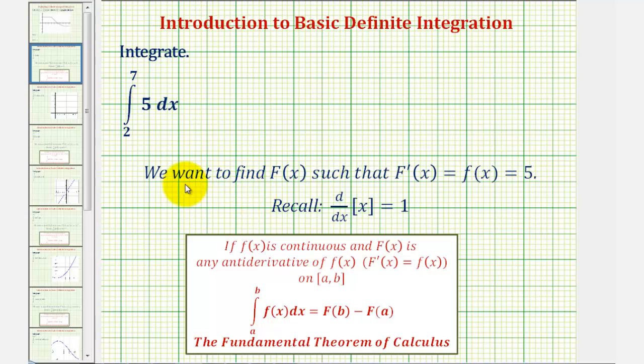To find the anti-derivative, we're trying to find a function, big F of x, such that the derivative of big F of x would be equal to five. So again, we're looking for a function whose derivative is five.